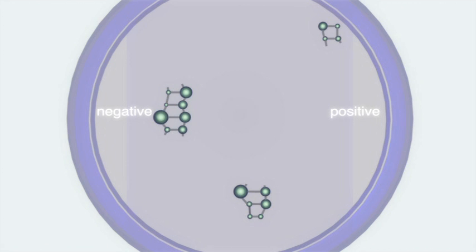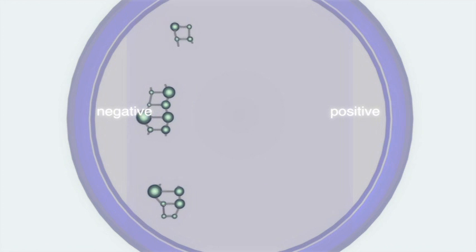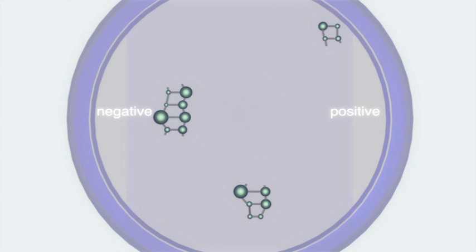Agarose gels have microscopic pores which act as a filter when molecules attempt to move through them. Smaller molecules will move through the gel more quickly than larger molecules. Those closest to the positive electrode are the smallest, and those farthest away are the largest.